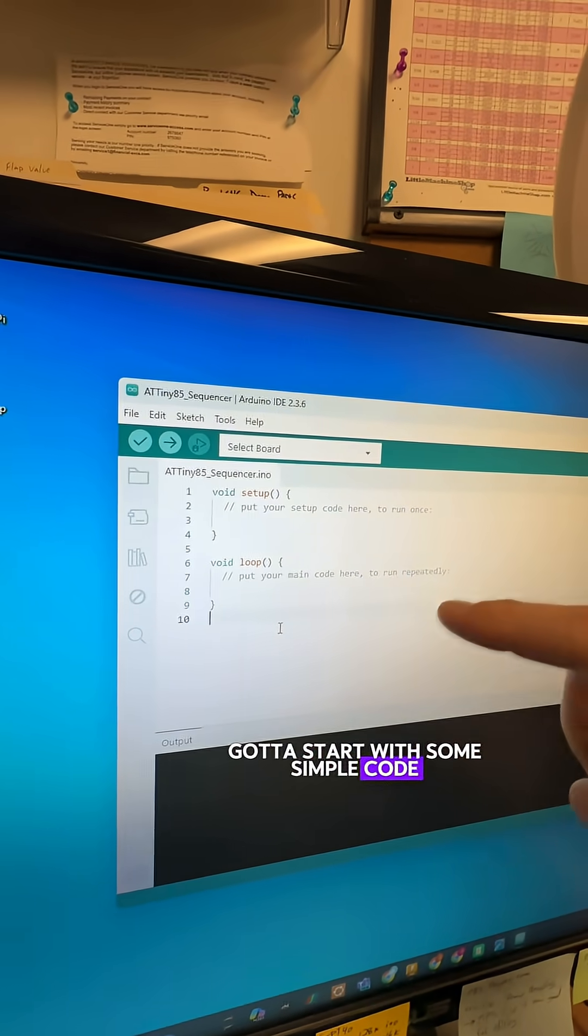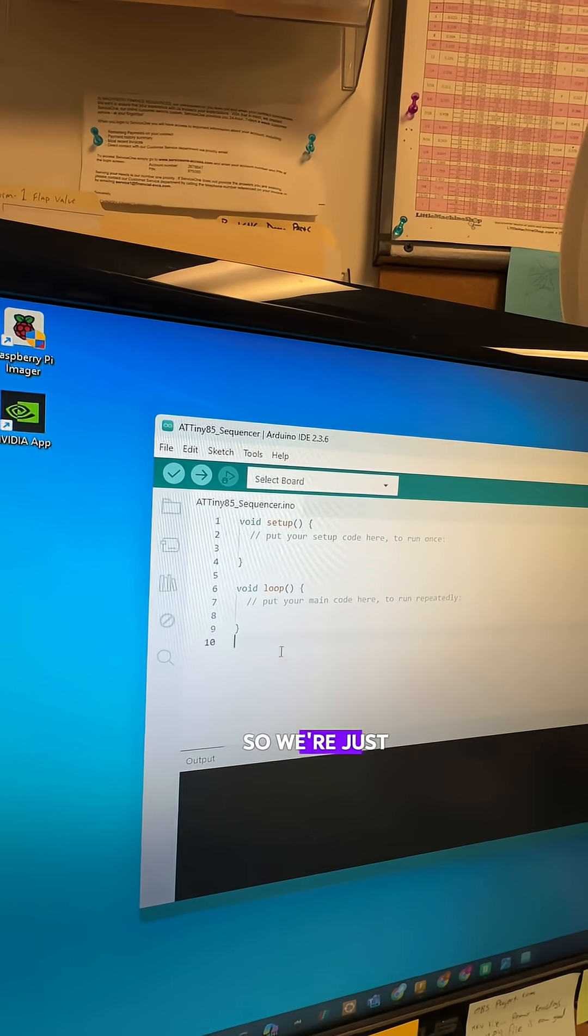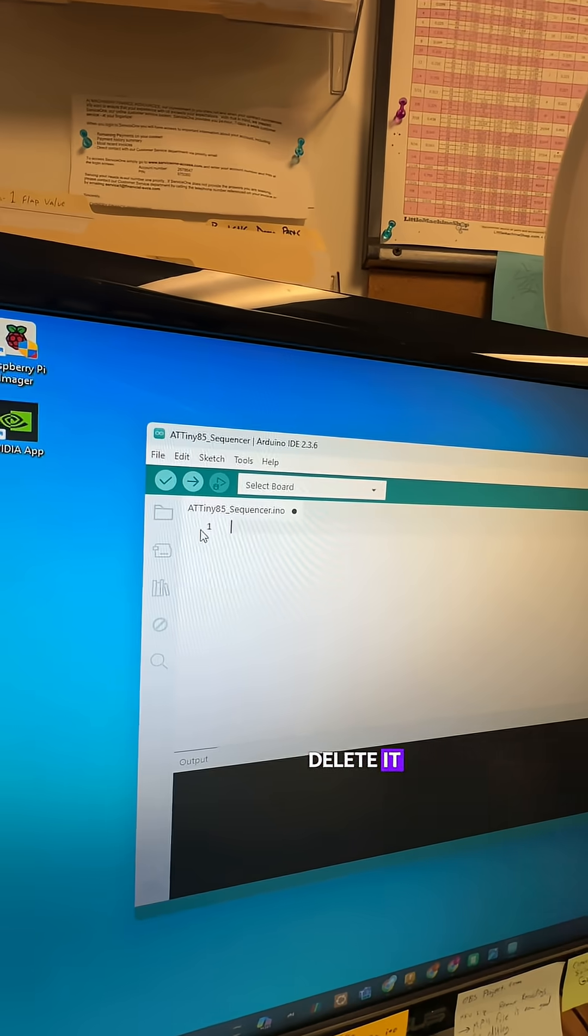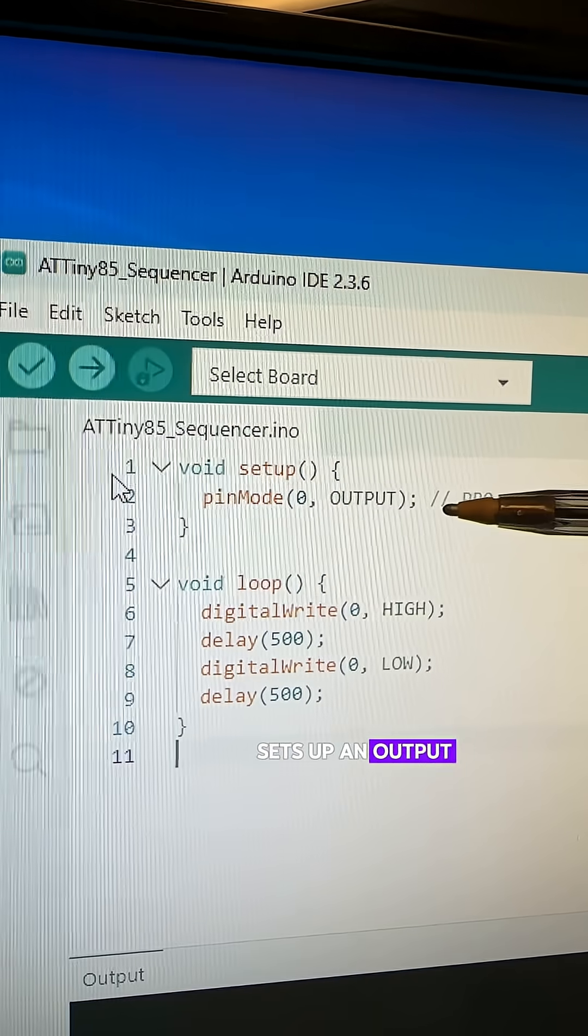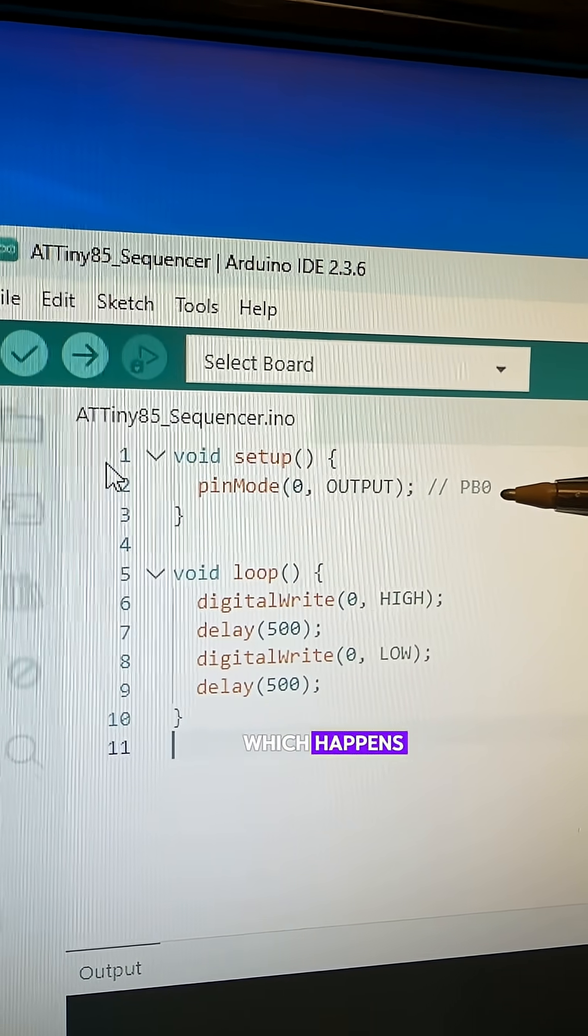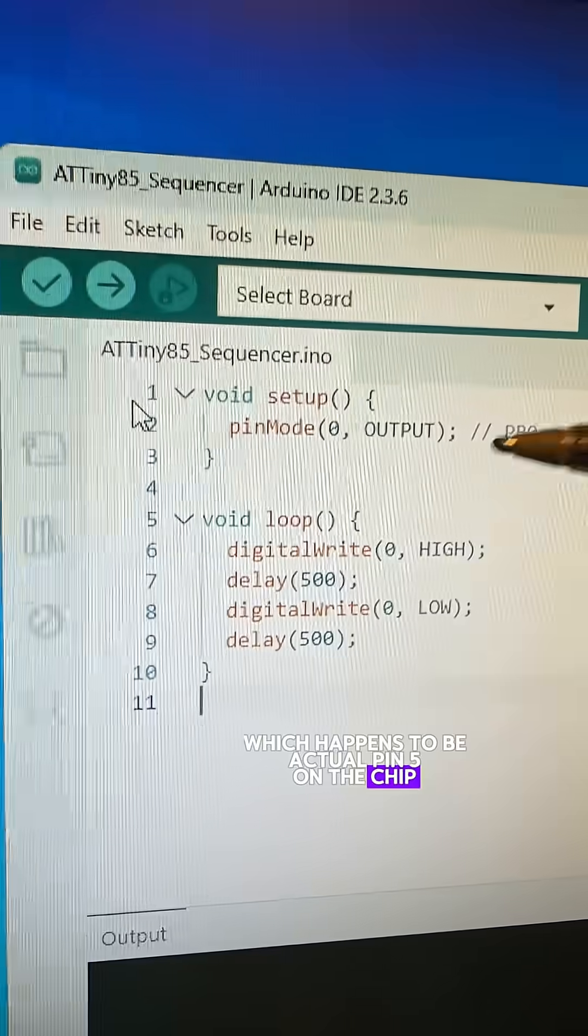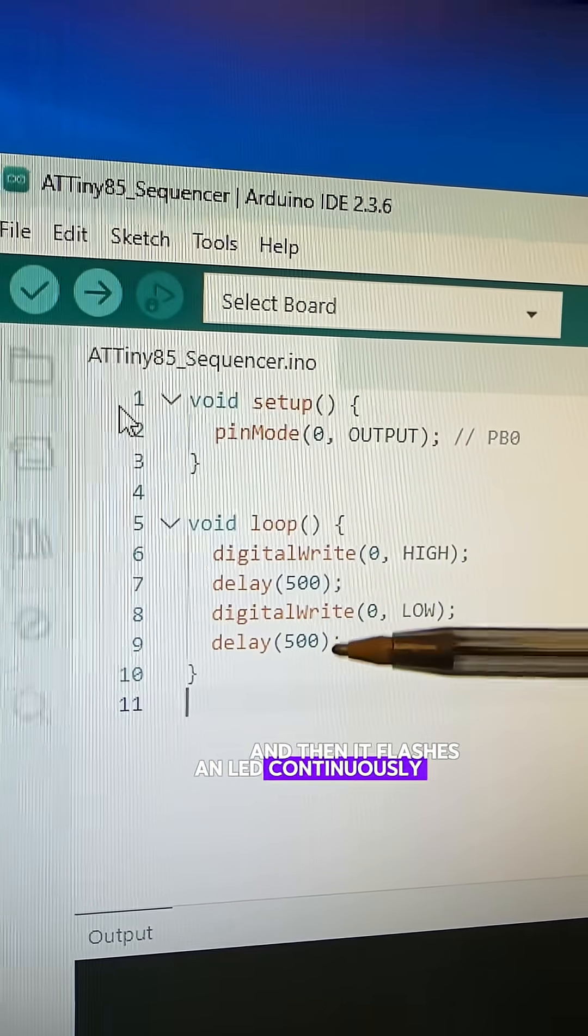We've got to start with some simple code, make sure that this compiles correctly. So we're just going to take all of this and delete it, and then paste this code here, which flashes an LED. First it sets up an output on port pin 0, which happens to be actual pin 5 on the chip, and then it flashes an LED continuously forever.